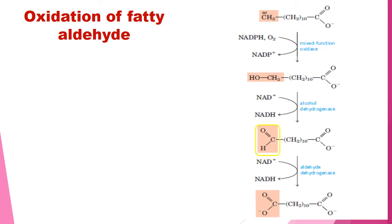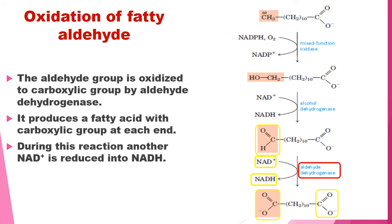The next step is oxidation of fatty aldehyde. In this step, the aldehyde group is oxidized to a carboxylic group by aldehyde dehydrogenase, producing a fatty acid with a carboxylic group at each end. During this reaction, another NAD+ is reduced into NADH.